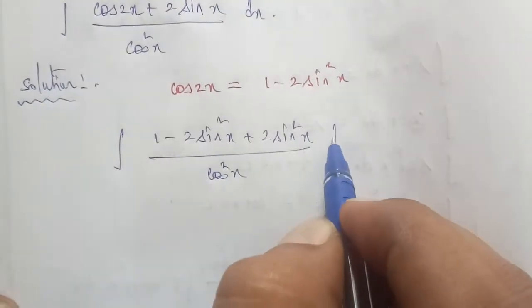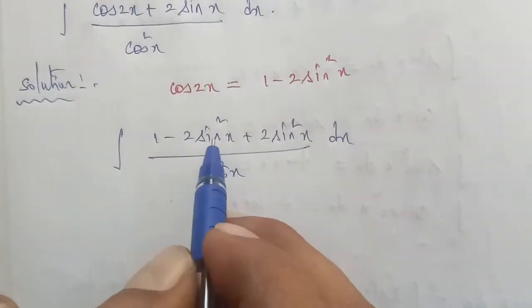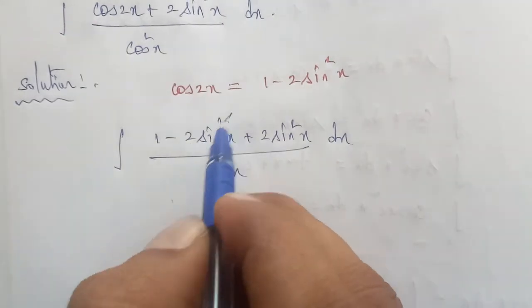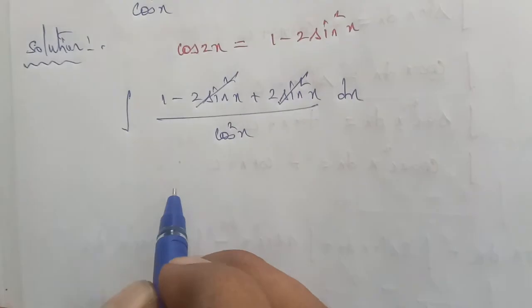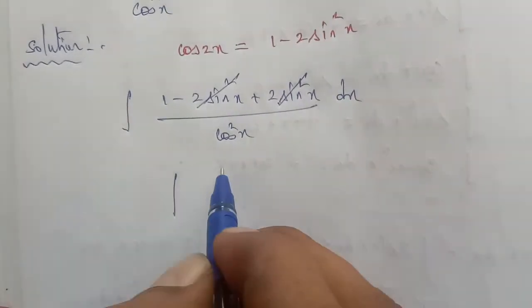Into dx. After putting the formula, minus 2 sine square x plus 2 sine square x cancel out.